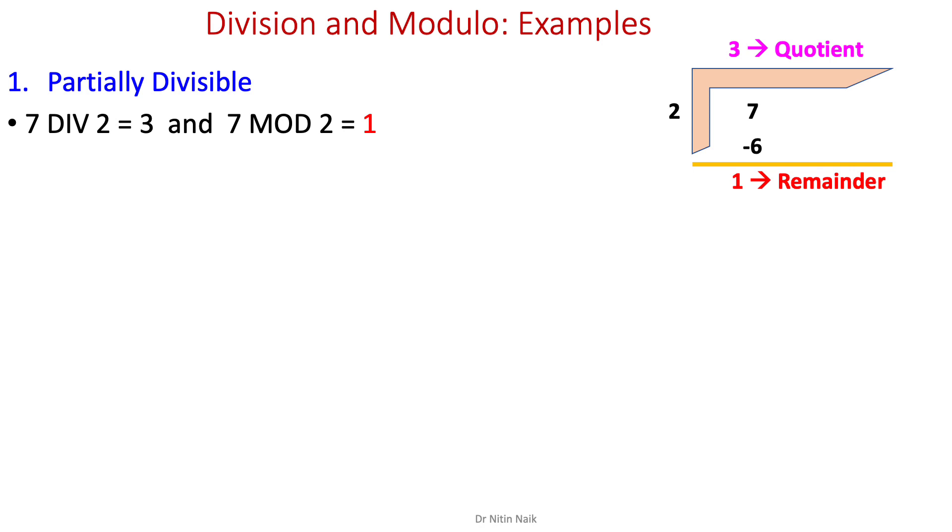The first condition is partially divisible. When the number is partially divisible, we always get a non-zero remainder. For example, 7 DIV 2 = 3 and 7 MOD 2 = 1. Let's look at another example. The remainder is again non-zero, three.